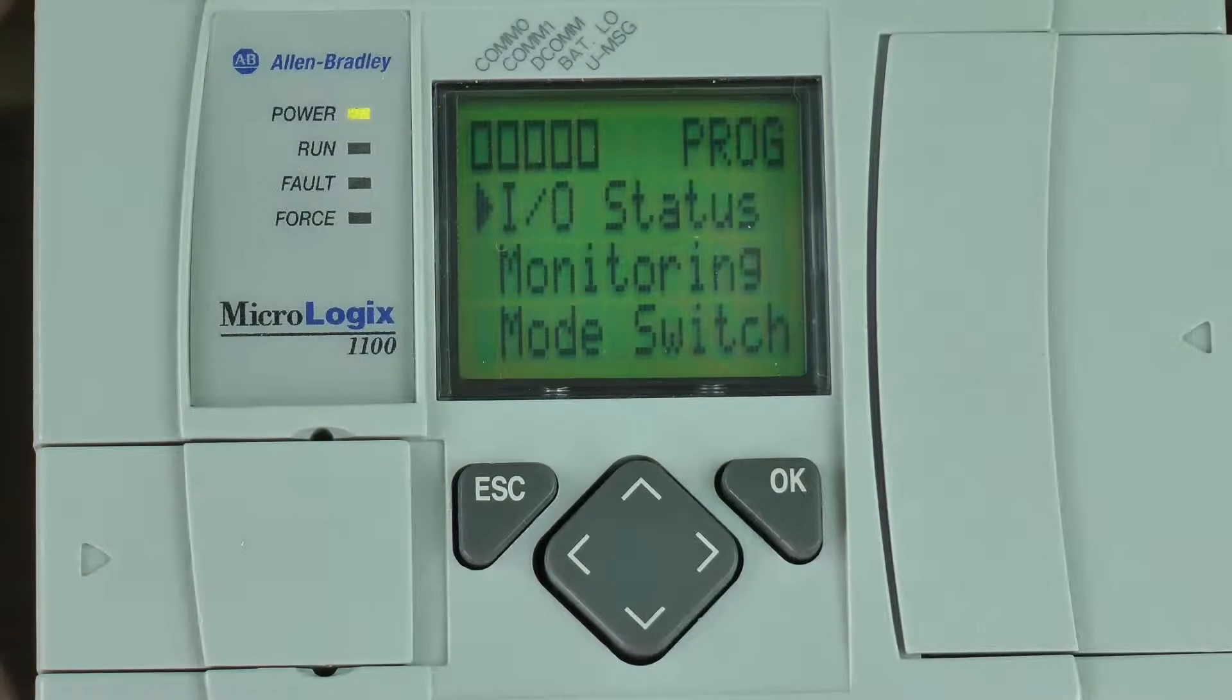Here we can see my MicroLogix 1100 all powered up and I'm at the main menu, which I've accessed by pressing the escape button. If I want to change the digital trim pot values,